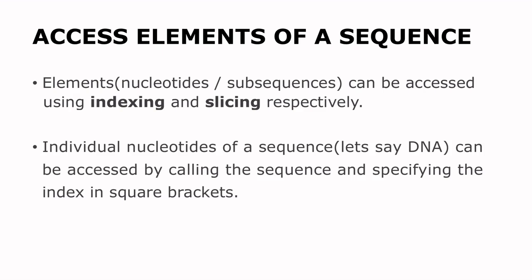Individual nucleotides of a sequence can be accessed by calling the sequence and specifying the index in square brackets. So for example, if you have a sequence that has been assigned to a variable by name DNA, then to access a particular nucleotide we specify DNA and then we indicate the index as has been shown here.